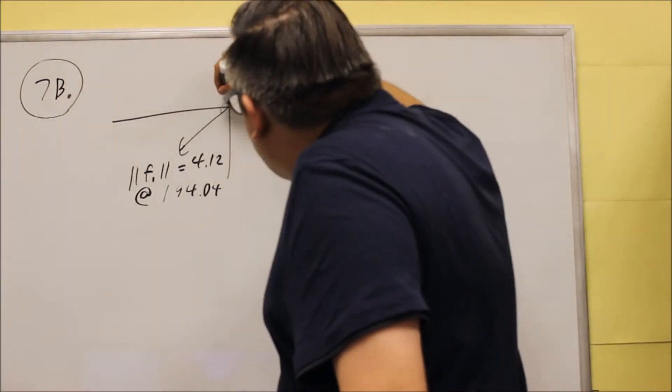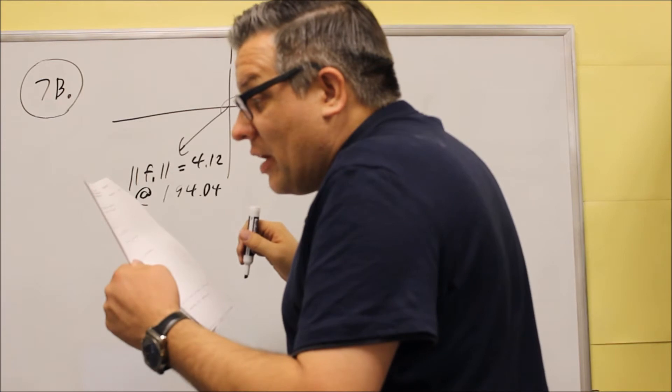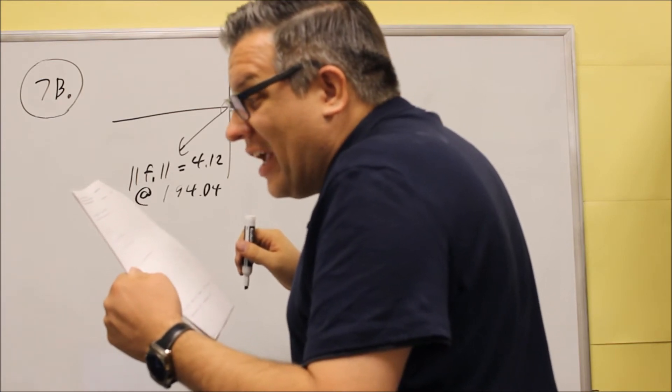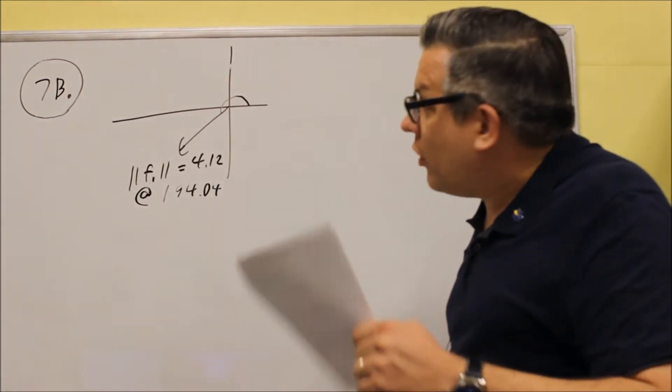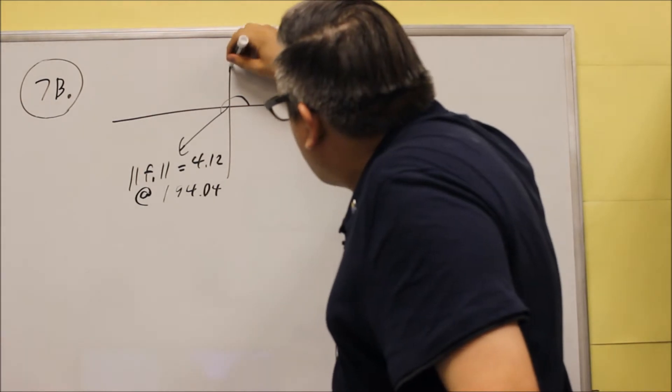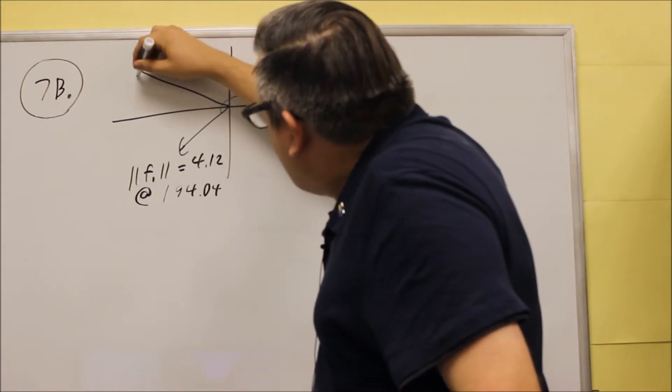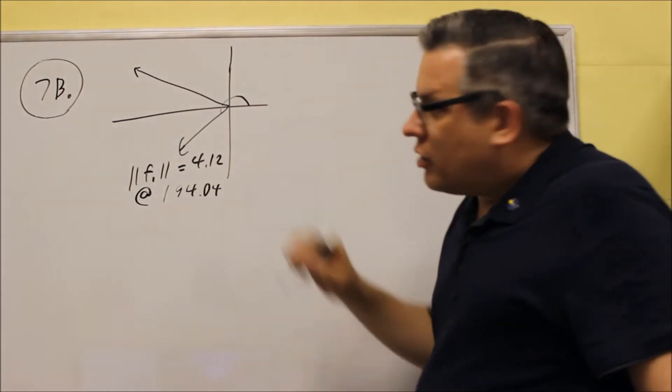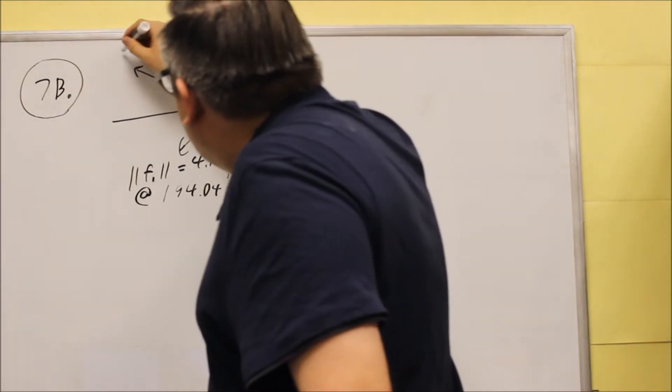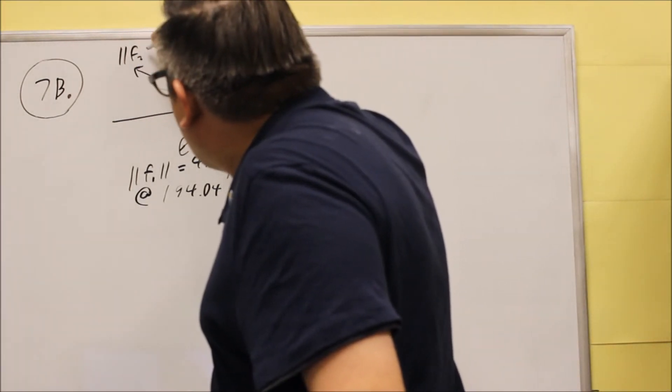Now the second one is going to be, it says it's 10 pounds, and the angle is 143.13. So 143 is going to be in the second quadrant. I'll draw it a little bit longer, and so this one, we said the magnitude was, let's call that F2.